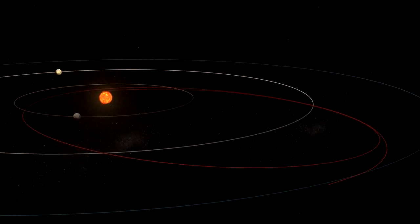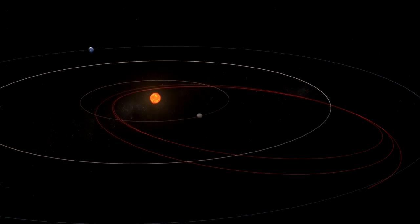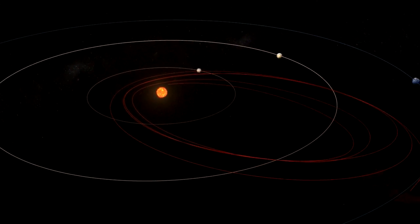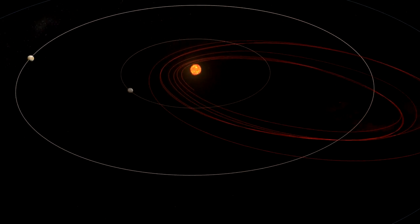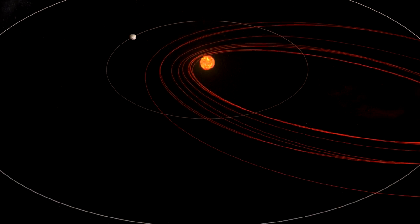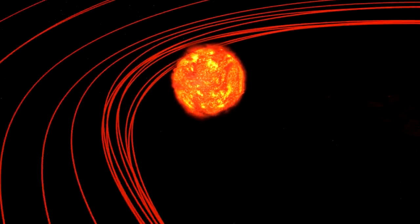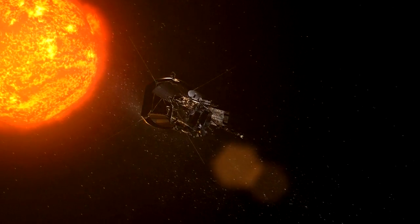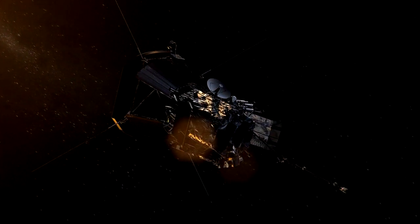The probe will use seven Venus flybys over a seven-year period, gradually reducing its orbit around the Sun. It'll dive into part of the Sun's atmosphere, the corona, for the first time, facing the ferocious heat and radiation around 1,300 degrees Celsius.